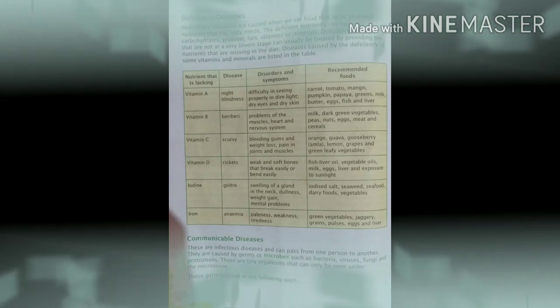Then the next one is vitamin D. The disease name is Rickets. Weak and soft bones that break easily or bend easily. Then the recommended foods are fish, liver oil, vegetables oil, milk, eggs, liver and exposure to sunlight.